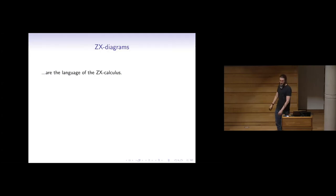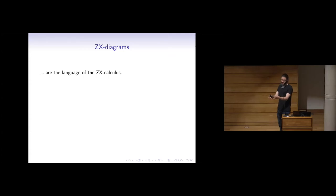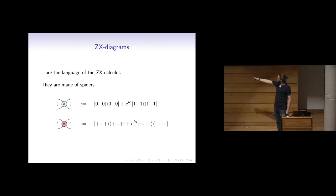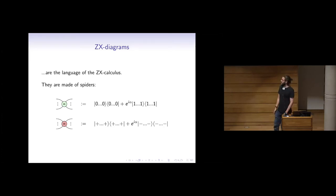ZX diagrams are the language of the ZX calculus. They're made of spiders — nodes which appear in generalized circuits or tensor networks. The important thing is that they're parameterized by a real angle, which is the relative phase between the two terms.